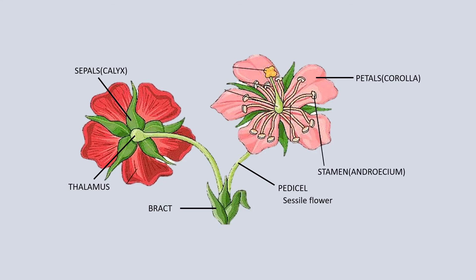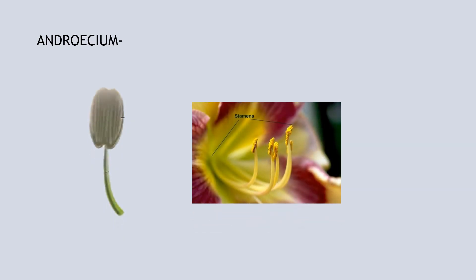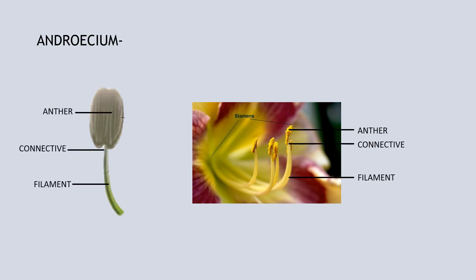Androecium: It is the male reproductive whorl and is made up of one or more stamens. Each stamen consists of three parts: filament, anther, and a connective. The anther is the fertile part of the stamen and it produces pollen grains.